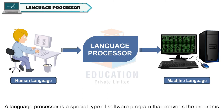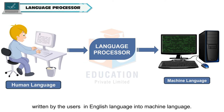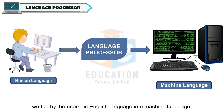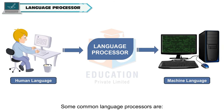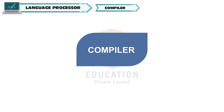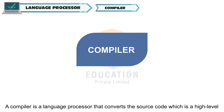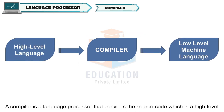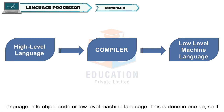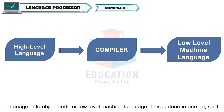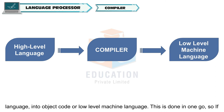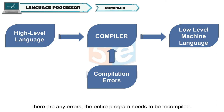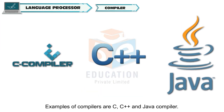These programs need to be converted into machine language by language processors for the computer to understand them. A language processor is a special type of software program that converts the programs written by users in English language into machine language. A compiler is a language processor that converts the source code, which is high-level language, into object code or low-level machine language. This is done in one go, so if there are any errors, the entire program needs to be recompiled. Examples of compilers are C, C++ and Java compiler.